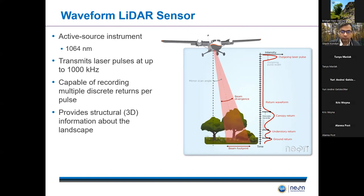LiDAR can be used to characterize the three-dimensional structure of vegetation. There are a couple of popular use cases for LiDAR: the first is determining vegetation heights, which we'll be doing today in this tutorial, and the other common use case is to estimate above-ground biomass in the vegetation.